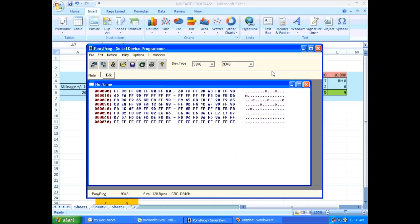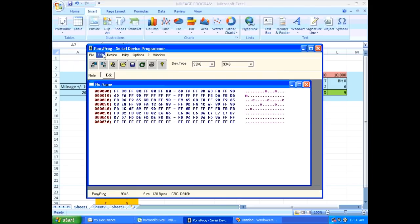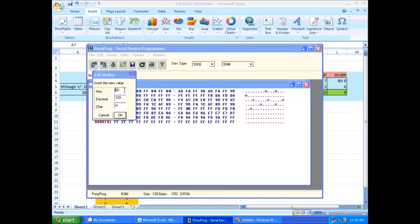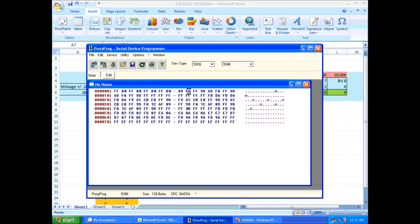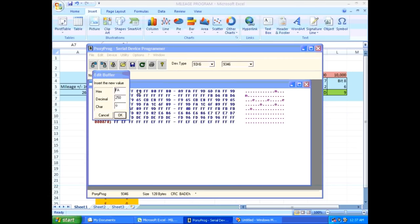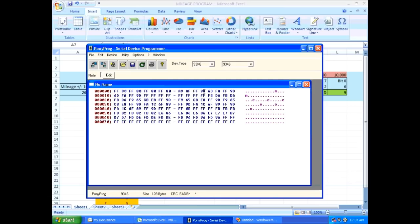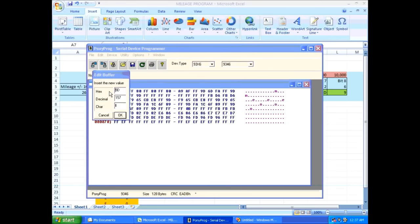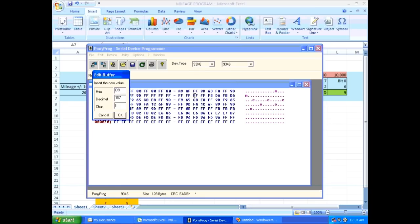So then we go to our program, click edit, and then edit buffer enable. And then we can double click and change the values. So in this case, A9, and then AF, FF, and then D9. And I need to repeat this three times.